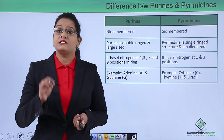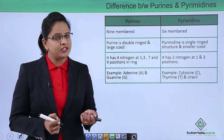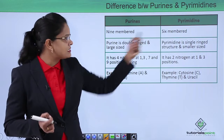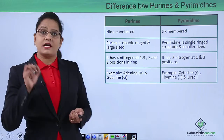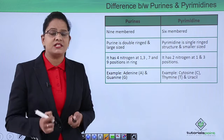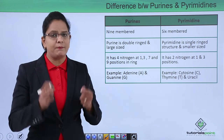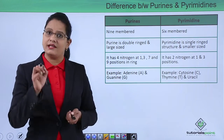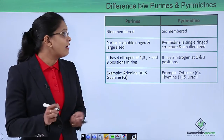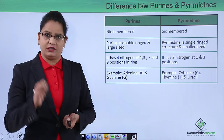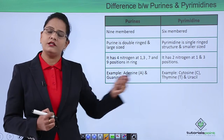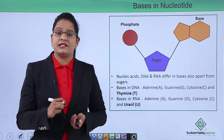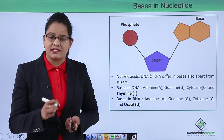The key differences between purines and pyrimidines: purines are nine-membered double-ring structures, making them large in size, while pyrimidines are six-membered single-ring structures and are comparatively smaller. Purines have four nitrogen atoms at positions one, three, seven, and nine, whereas pyrimidines have only two nitrogen atoms at positions one and three. Purines are of two types — adenine and guanine — while pyrimidines are of three types — cytosine, thymine, and uracil.